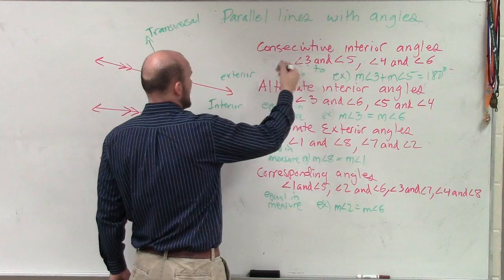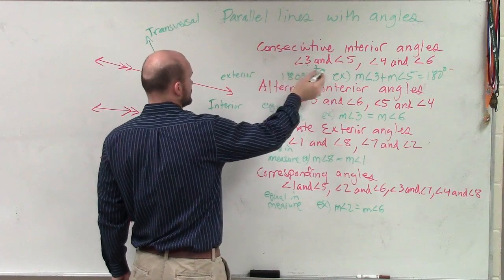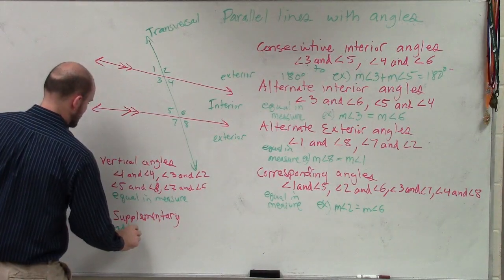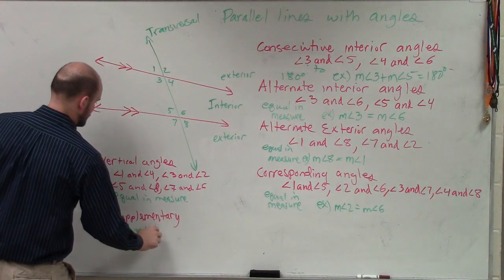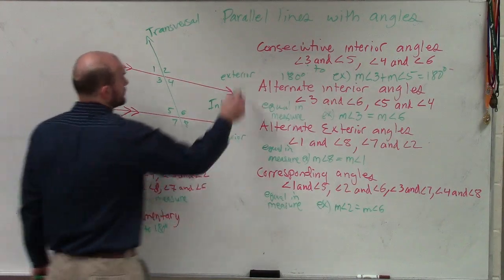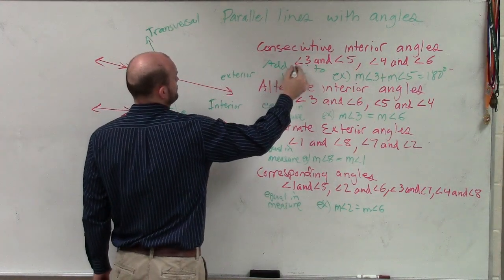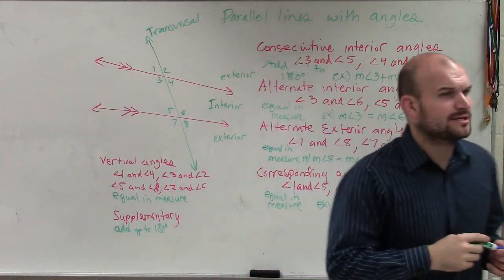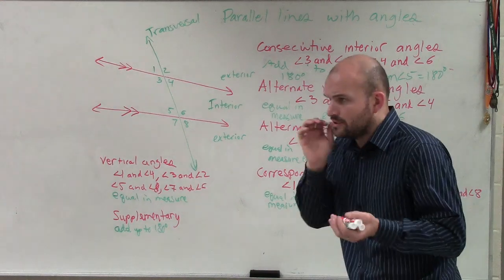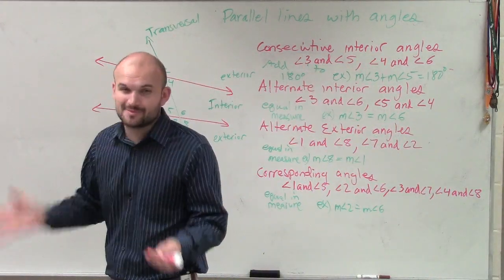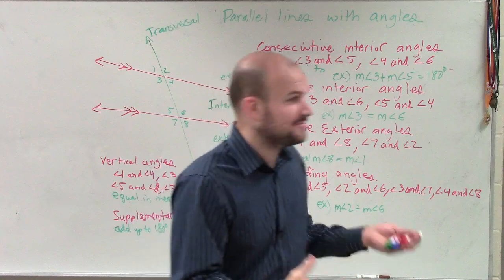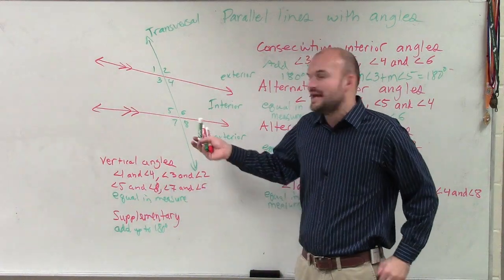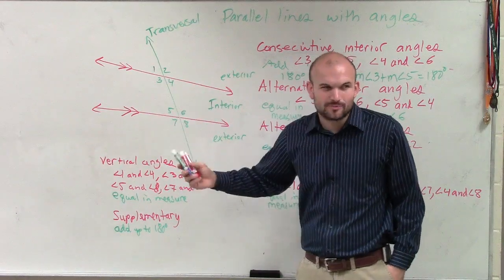Consecutive interior angles add up to 180, or equal to 180. Supplementary angles add up to 180. What's important about supplementary angles — there's a really important pair. Remember, supplementary angles are just two angles that add up to 180. They just have to add up to 180. However, here we have what we call a linear pair.